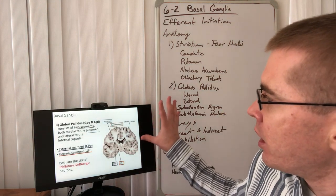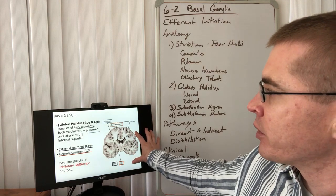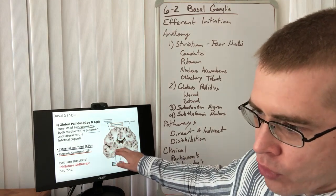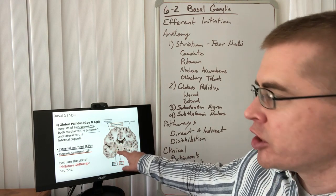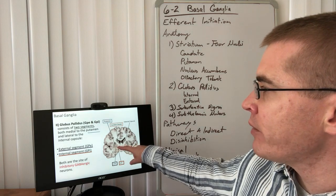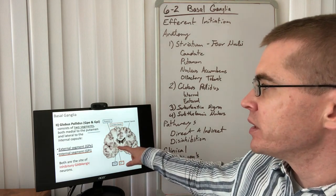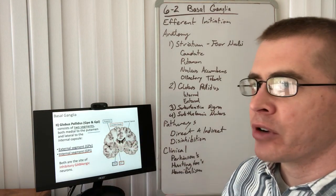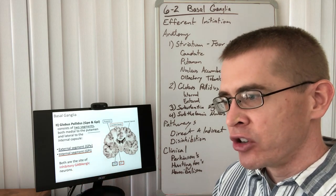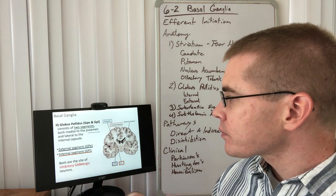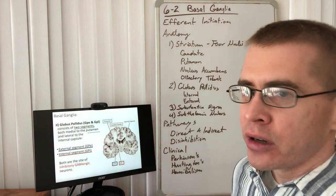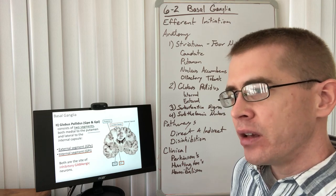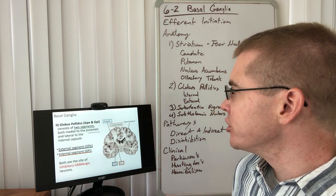Going farther posterior, more caudally in the brain, we can see that the lentiform nuclei begin to differentiate from the putamen. We now have the globus pallidus, the second portion of the basal ganglia. The globus pallidus is separated into two different nuclei: the external and the internal segments. Both of these are inhibitory neurons, so their projections inhibit their target neurons — the GPe and GPi.